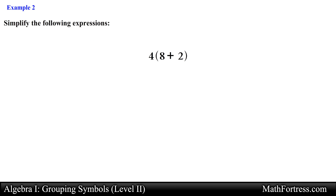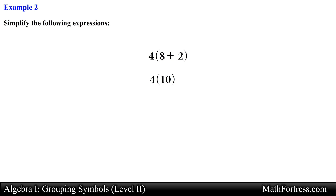Alright, let's try the next one. Here we have a parenthesis. We need to simplify the expression within the grouping symbol first. We add 8 and 2 which simplifies to 10, and then we multiply 10 by 4 which gives us the final answer of 40.